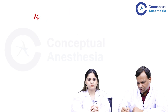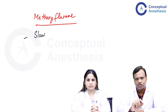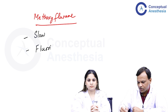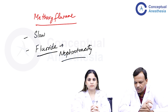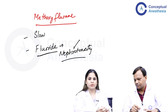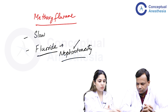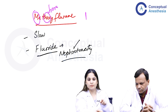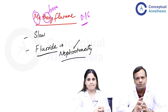Methoxyflurane is not used nowadays for two main reasons. First, it is very slow acting due to the highest blood gas partition coefficient. Second, it releases a large amount of fluoride on metabolism, leading to nephrotoxicity and high-output renal failure. Although methoxyflurane is the most potent inhalational agent with the lowest MAC of 0.16 — remembered as 'me' equals one and 'hoxy' as hexa meaning six, giving 0.16 — nephrotoxicity is its major limiting problem. The MAC of nitrous oxide is 104%. These are the two MAC values to remember.